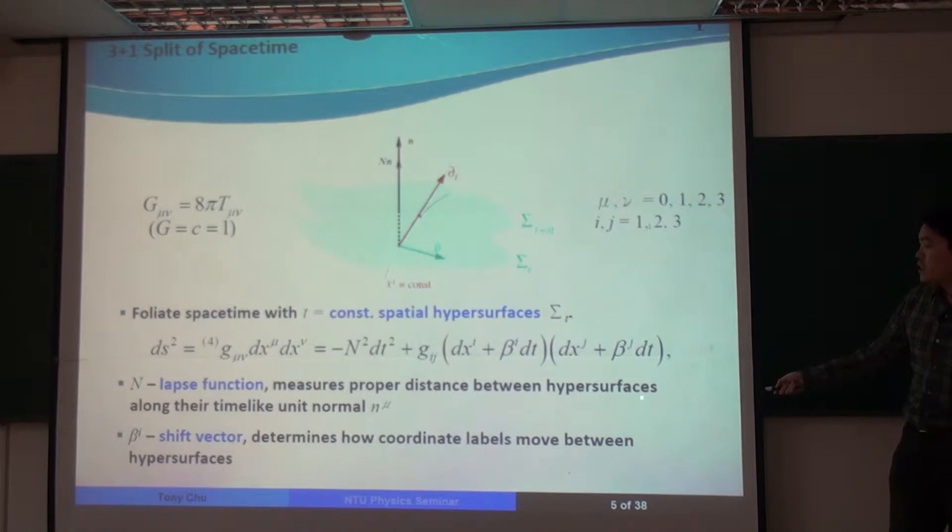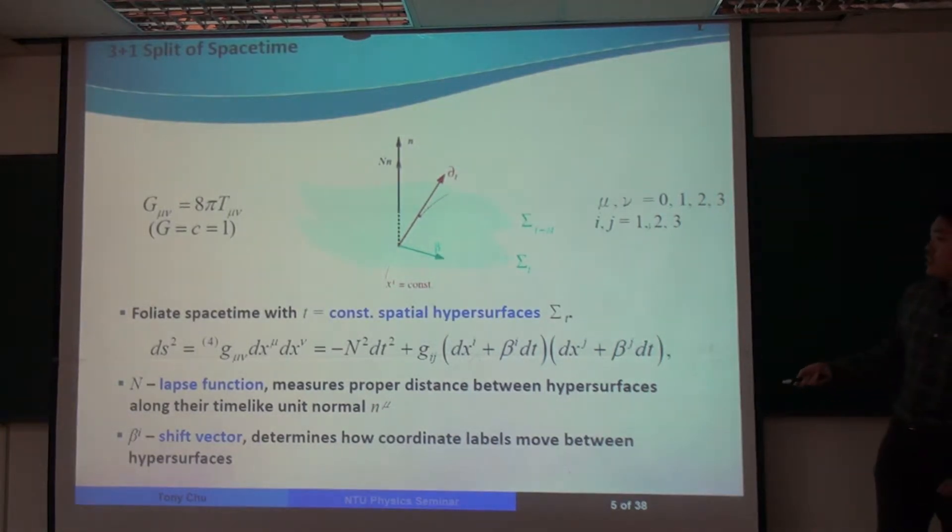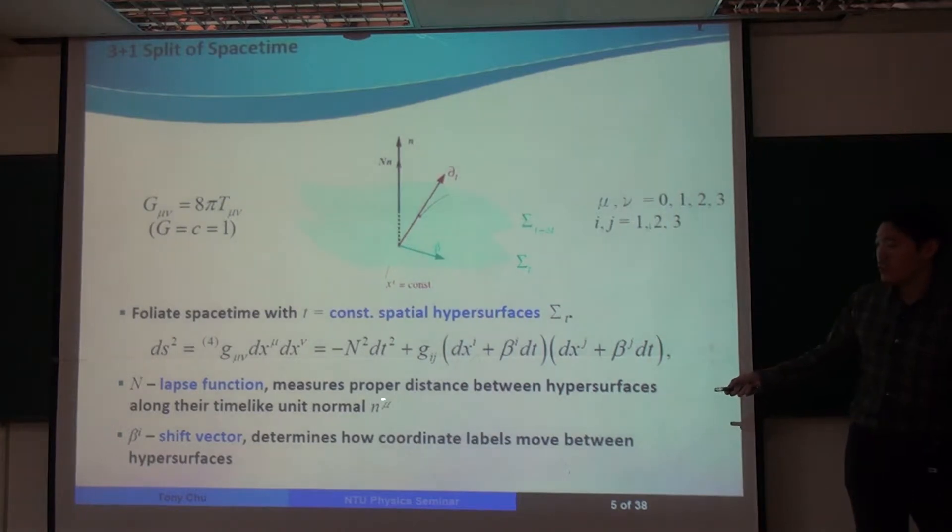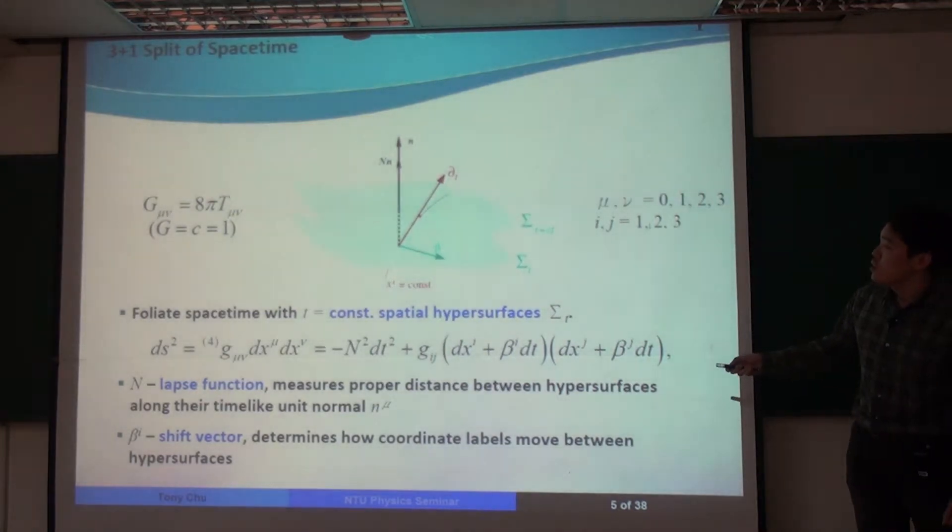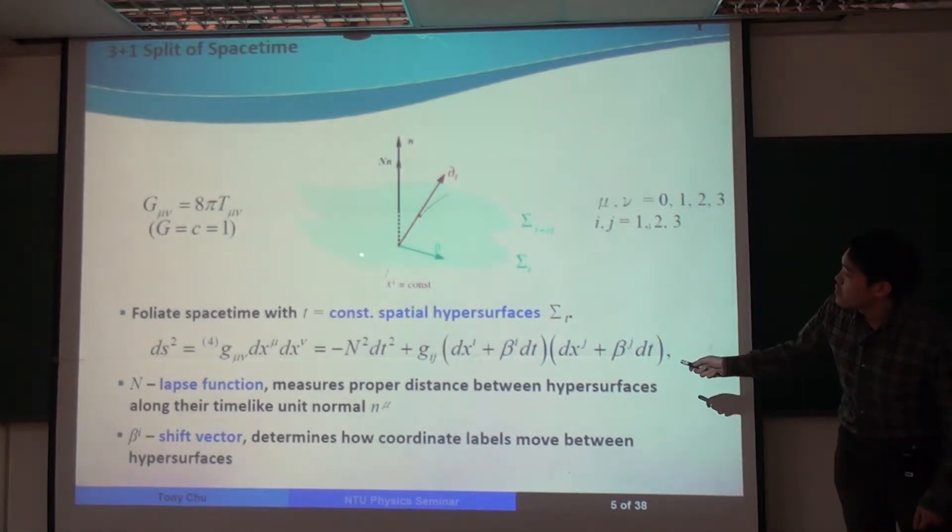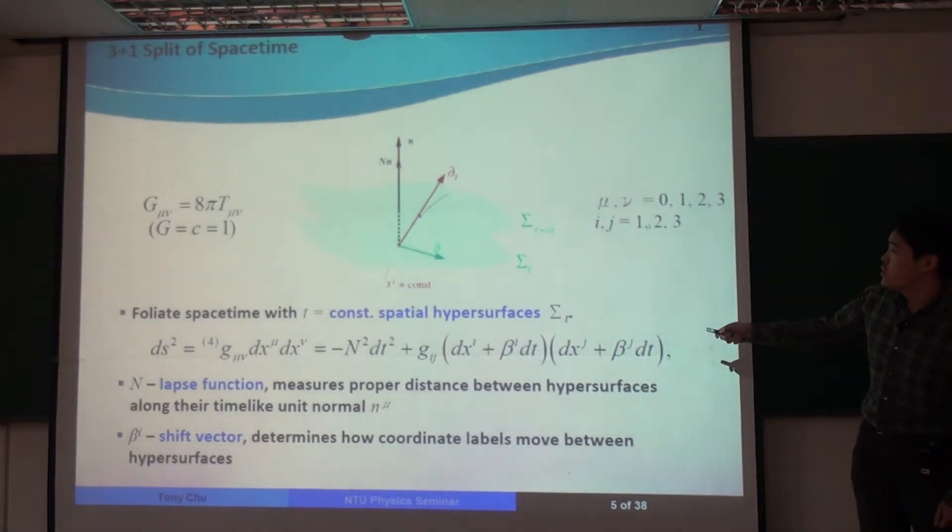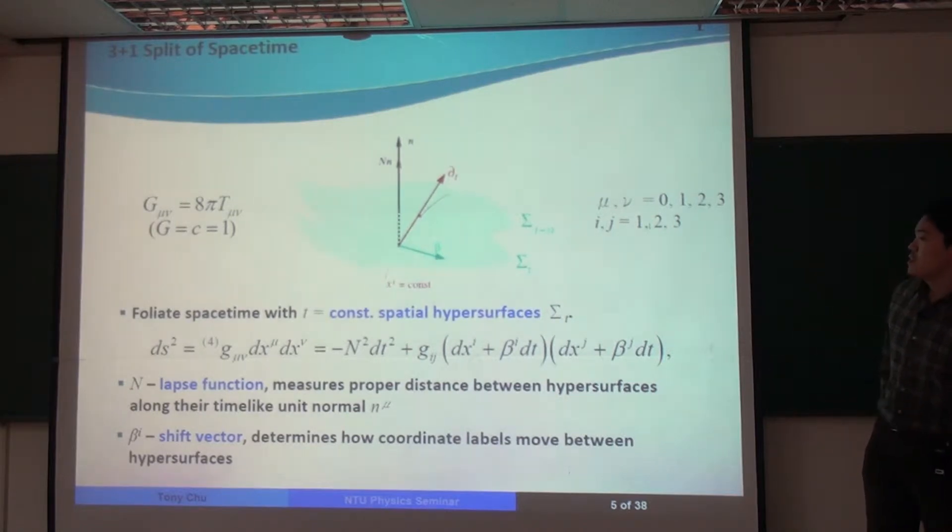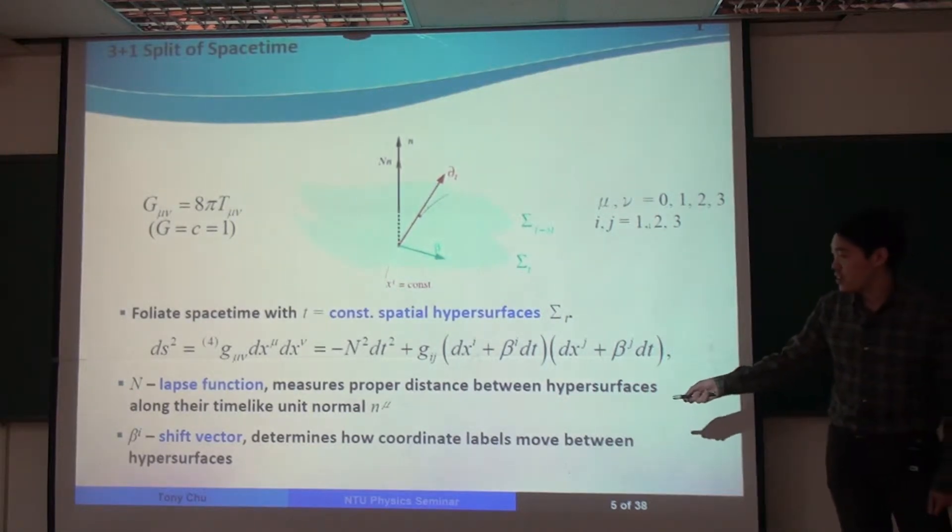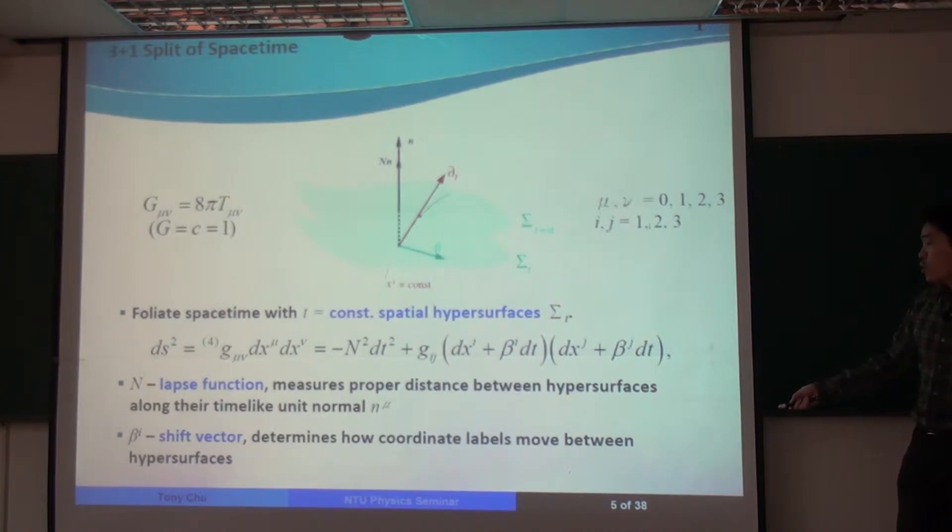And there's also a quantity n called a lapse function. This measures proper distance between the hypersurfaces along a timelike unit normal n to the hypersurfaces. If this is a hypersurface here, this is the timelike unit normal. The lapse function measures the distance between this hypersurface to the next hypersurface. And we have a shift vector, beta, and that determines how our coordinate labels move between the hypersurfaces.